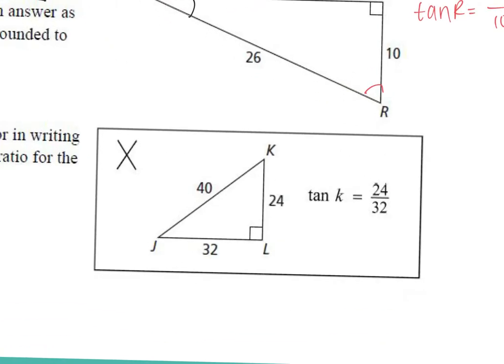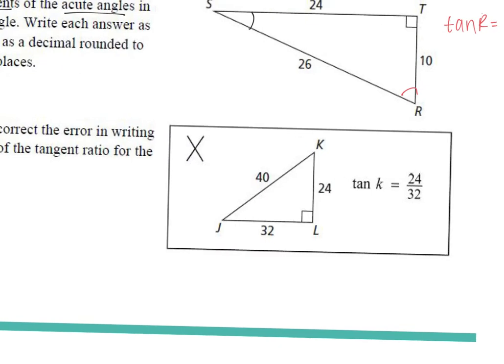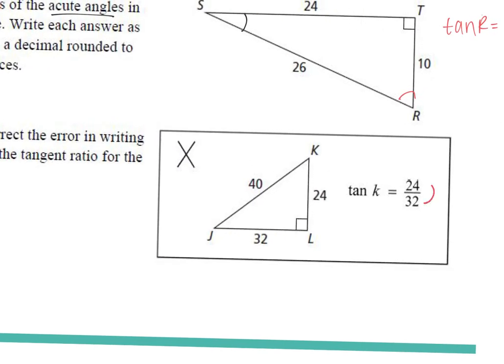For this bottom problem: describe and correct the error in writing the statement of the tangent ratio for the given figure. What's the tangent of K? They put 24 over 32 — what was their mistake? It should be 32 over 24. They went adjacent over opposite; it should be opposite over adjacent, which is 32 over 24. Why aren't we using the 40? Because it's the hypotenuse. You're not going to use the hypotenuse for tangent.